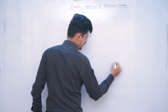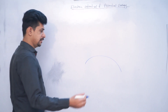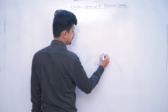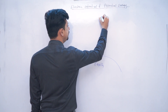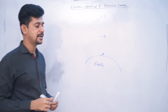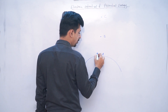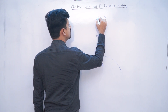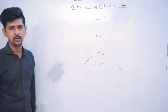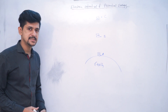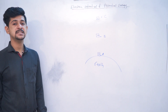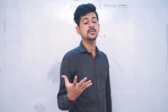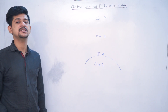Let me take the example of gravity. This is Earth, and let's take three places: point A, point B, and point C. I will be keeping one body at all three places. Let's say the mass of the body is M. Now the question here is: at which place will this body feel the most acceleration due to gravity? At which point will the most gravitational force be exerted?